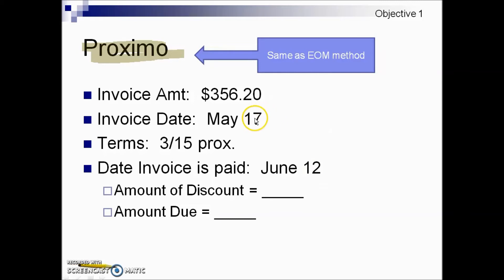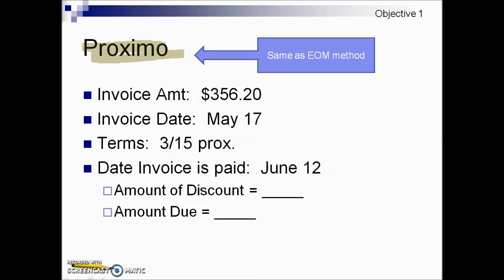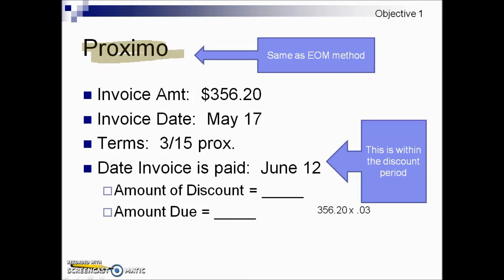In this Proximo example, we have an invoice date of May 17th. The terms are 3/15 Prox — short for Proximo — handled the same way as end of month, and it was paid June 12th. Are they eligible for the 3% discount? Since it is the end of month method and the invoice date was May 17th, the final discount date is June 15th, so they met the window of the discount period. We take 3% times the invoice amount to determine the discount, and for the payment we subtract that discount from the invoice amount to give us the value that should be paid.